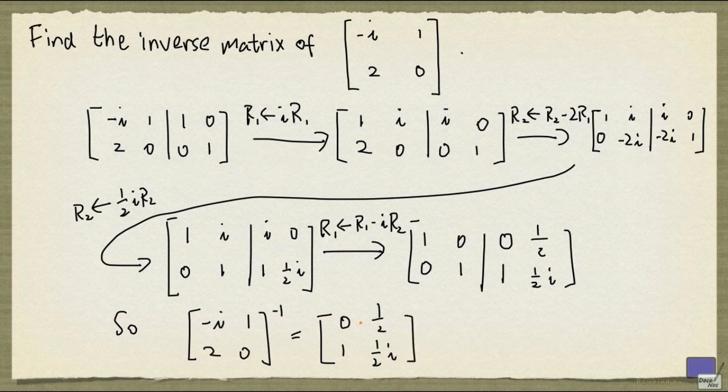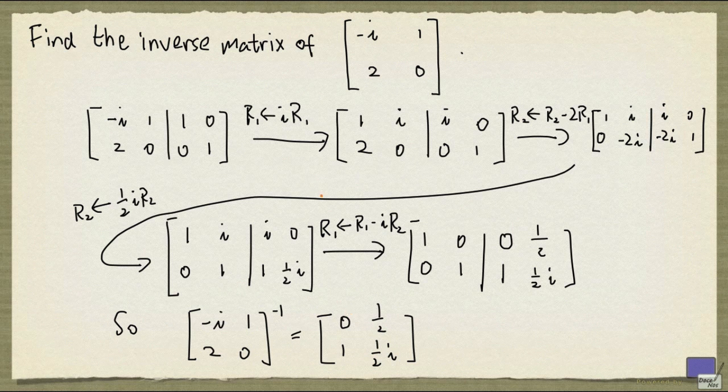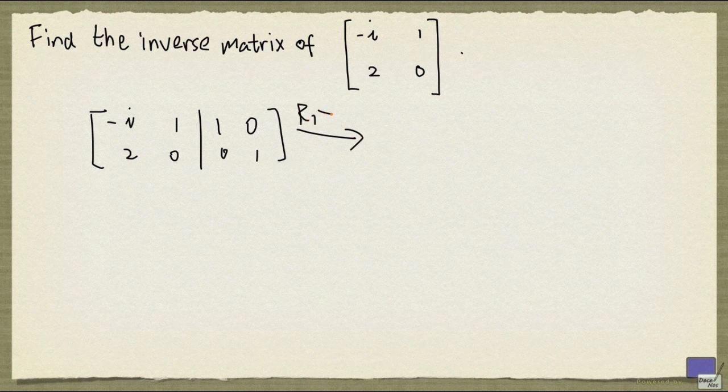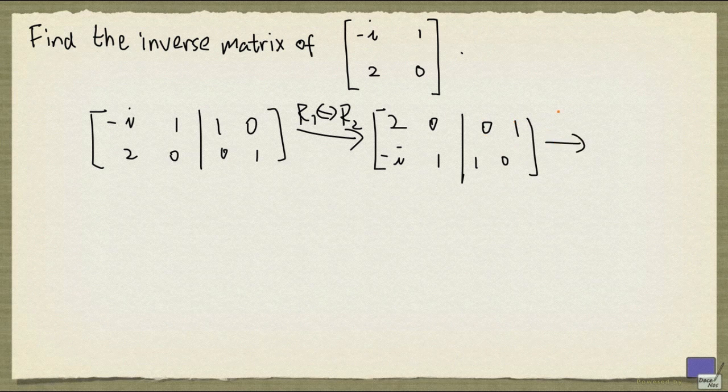We could have gotten this answer faster if we choose the elementary row operations that we perform differently. Again, let's start with this matrix here. And I'm going to swap rows 1 and 2 first, and multiply row 1 by 1 half.